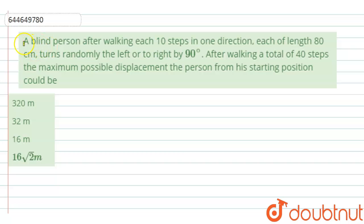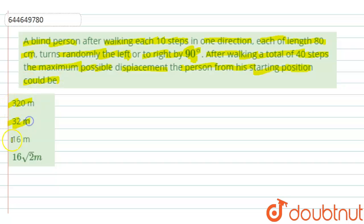The given question: a blind person, after walking each 10 steps in one direction each of length 80 centimeters, turns randomly to the left or to the right by 90 degrees. After walking a total of 40 steps, the maximum possible displacement of the person from the starting position could be — the given options are 320 meters, 32 meters, 16 meters, and 16√2 meters.